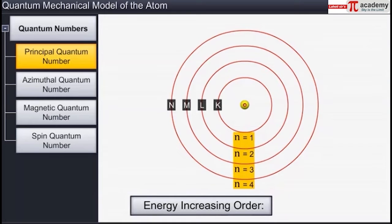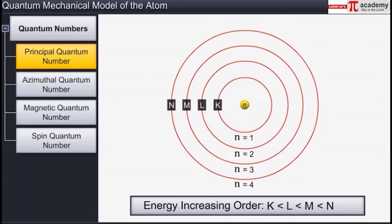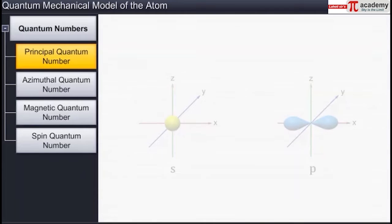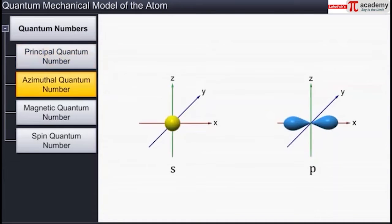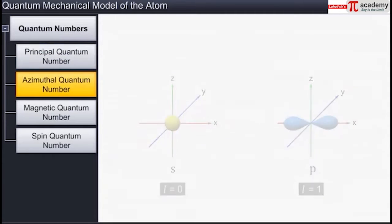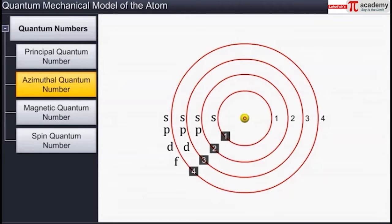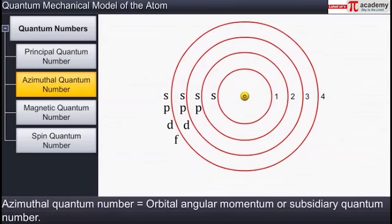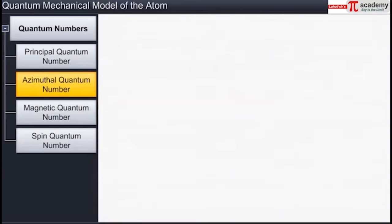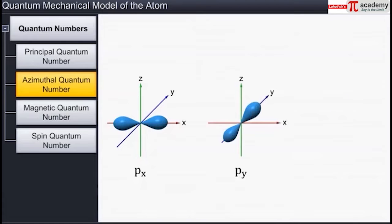As energy increases with the increase in n, the energies of the various shells follow the sequence: K less than L less than M less than N and so on. The azimuthal quantum number, denoted by the letter l, gives the number of subshells. It is also known as the orbital angular momentum or subsidiary quantum number. The azimuthal quantum number also describes the three-dimensional shapes of orbitals. For a given value of the principal quantum number n, the azimuthal quantum number l can have n values ranging from 0 to n minus 1.